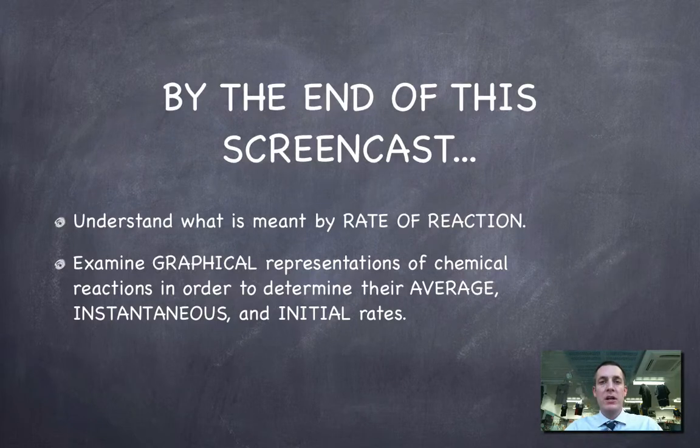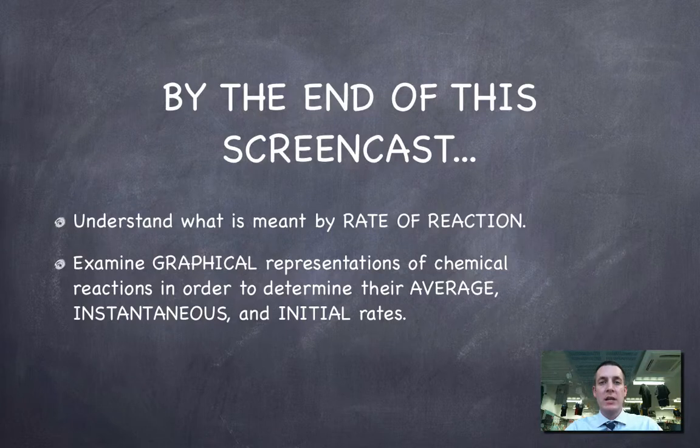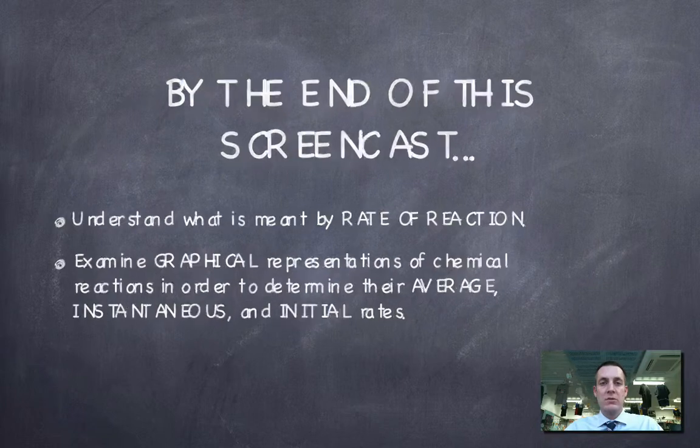By looking at some graphs of experimental data, we'll consider what we mean by three different kinds of rate: the average rate, an instantaneous rate, and the initial rate of a chemical reaction.